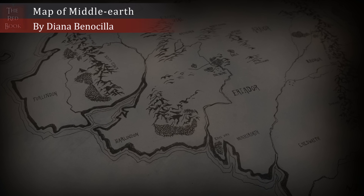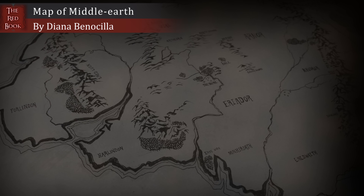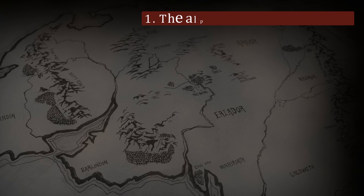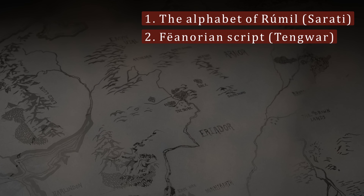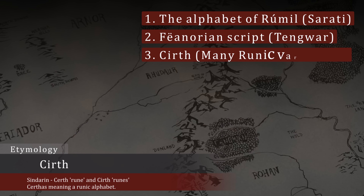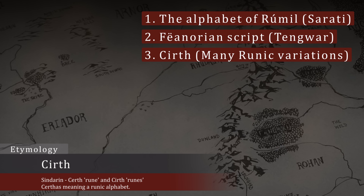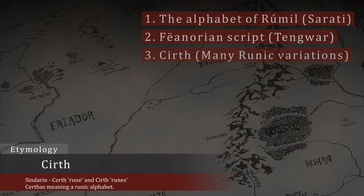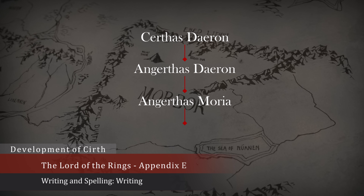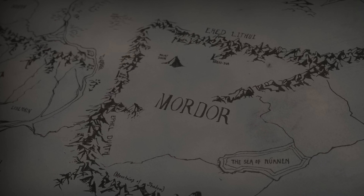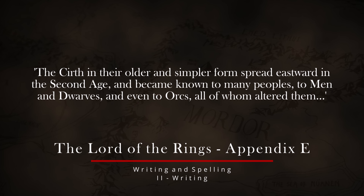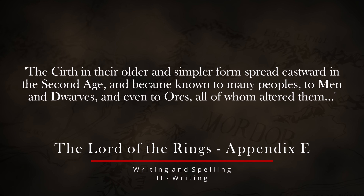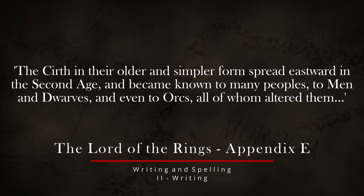When writing in Middle-earth, you are limited to scripts invented by the Elves. The alphabet of Rúmil, the Fëanorian script — both coming from Elves. Even Cirth, which is often associated with the Dwarves due to their keen use of it, was devised by an Elf, Dairon of Doriath, the Minstrel of Thingol. These are the three choices available when it comes to writing, with even Orcs using some variation of what was already developed — possibly another less spoken of example of evil twisting what others had made.